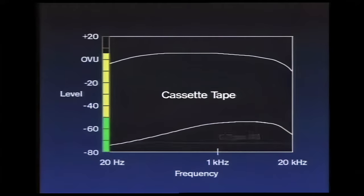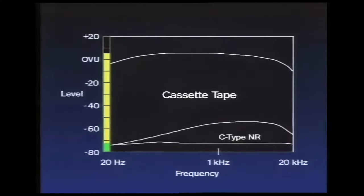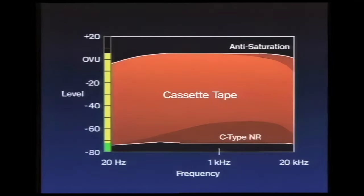C-Type NR adds a second stage of processing, which fully doubles the noise reduction effect from 10 to 20 dB, and covers more of the frequency spectrum. Additional circuits help to reduce tape saturation when recording high-level, high-frequency signals. C-Type NR enables you to record from compact discs with virtually no audible tape noise.